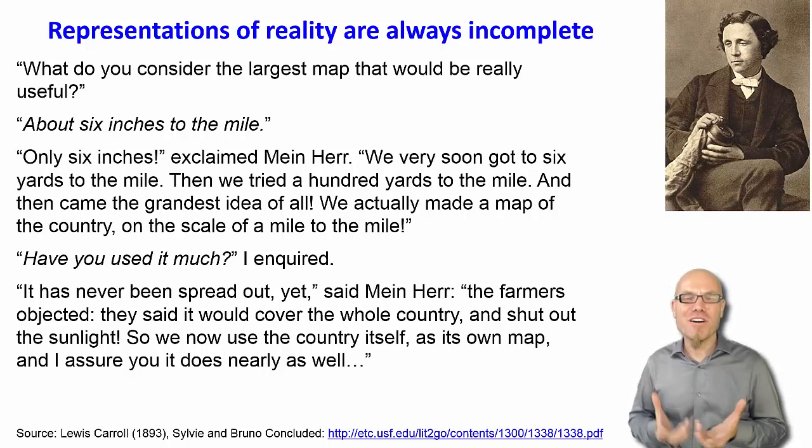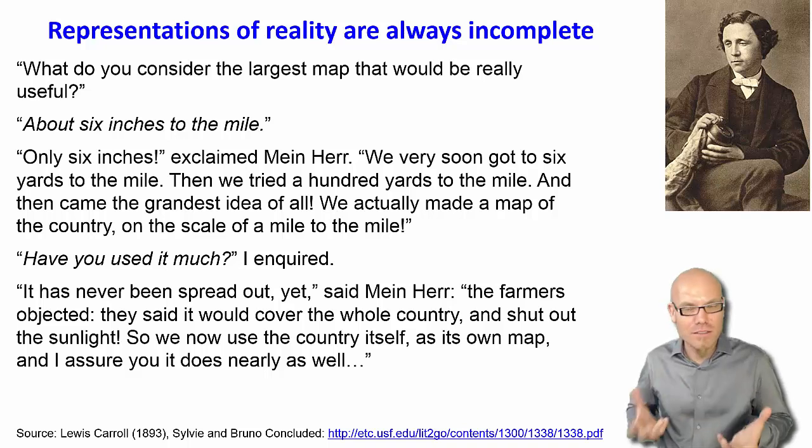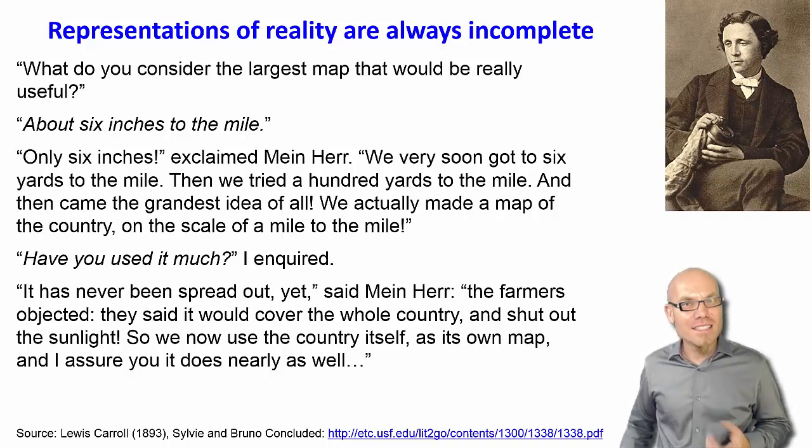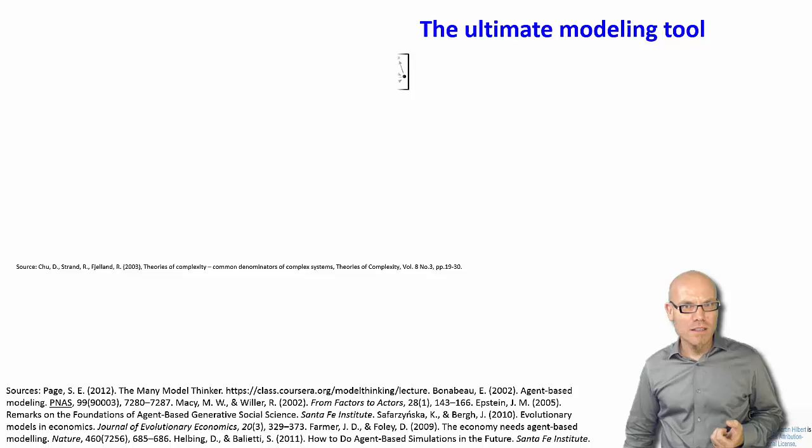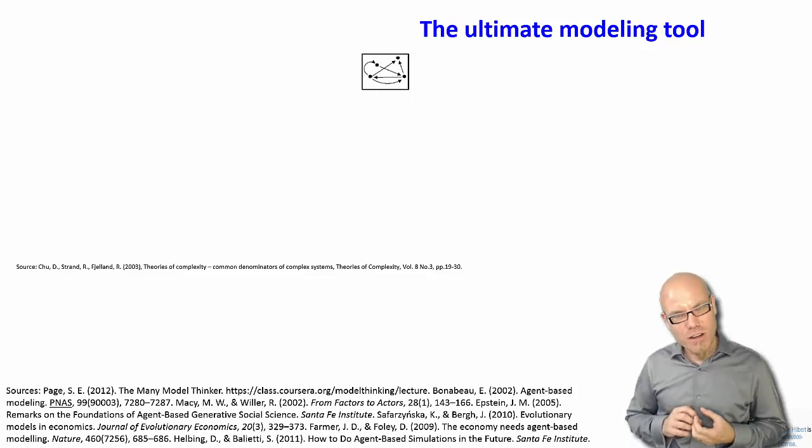So of course, a map one to one is completely useless, and then you can use the country as well, and that's the basic limitation of science. We never have a map that is actually one to one. You usually have an abstraction from reality.